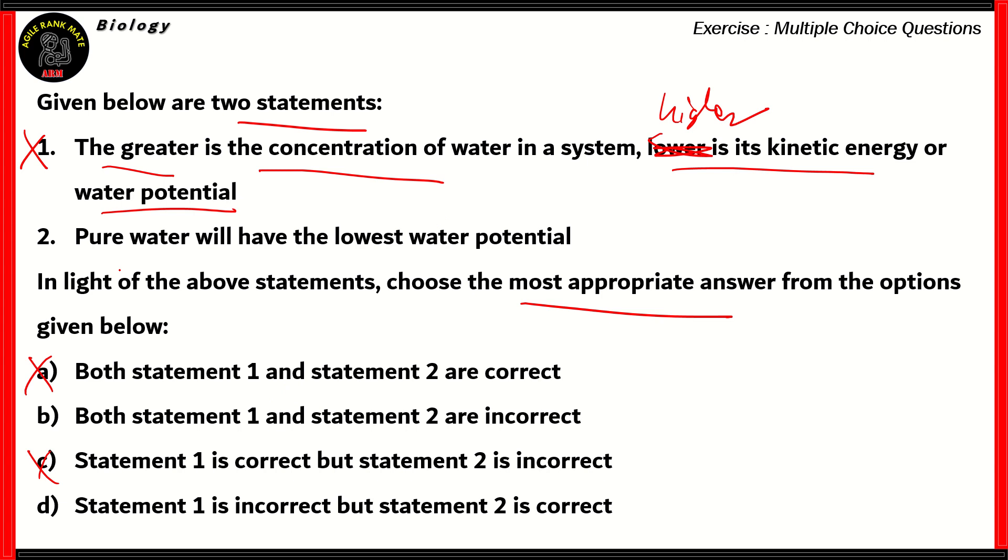So how do you choose between B and D? Let's look at statement number two. Pure water will have the lowest water potential. Now, as you've seen in the first statement, if you have greater concentration of water, then there is a higher water potential. Pure water has the highest concentration at 100%. So therefore, instead of lowest, it will have the highest water potential. So as you can see, statement two is also incorrect.